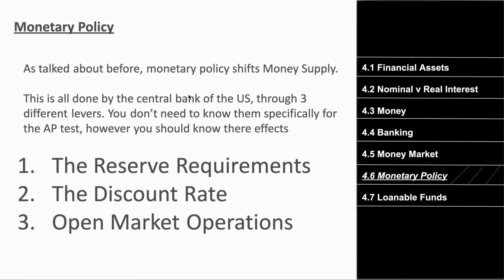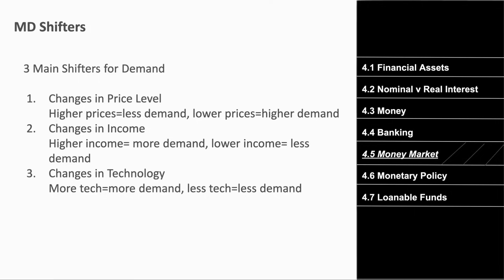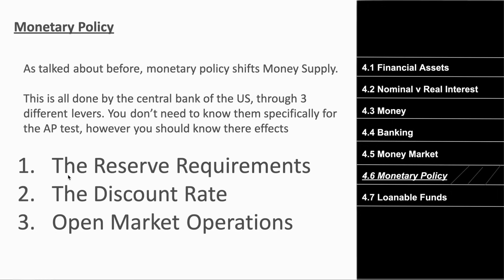Just like fiscal policy, the central bank of the U.S. uses monetary policy to stabilize the economy and protect from recession and inflation by changing the money supply. They use three main mechanisms: the reserve requirement, the discount rate, and open market operations. For the AP test, you mainly need to know that these exist and how they work.